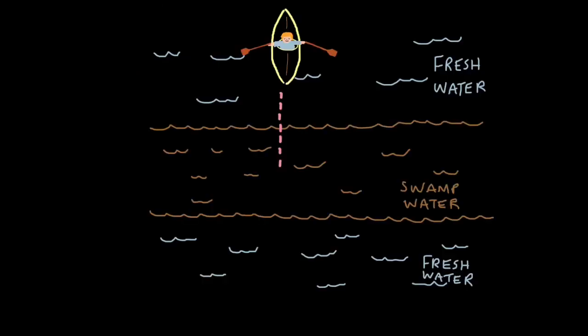So this is my example to explain how refraction occurs with light waves, EM waves only, not sound waves. Imagine this is an example. We have someone in a canoe, and the canoe is traveling from fresh water, nice, clean, fresh water, to thick, gloopy, swampy water, then back into fresh water.